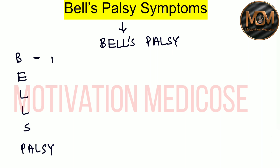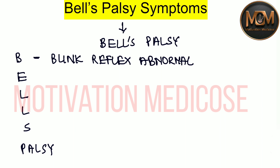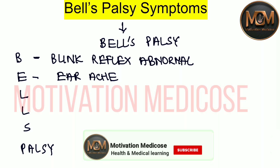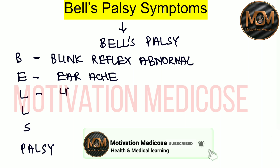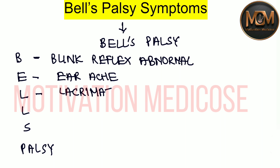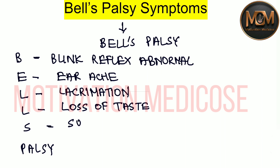From B we have abnormal blink reflex. From E we have earache. From the first L we have lacrimation. From the second L we have loss of taste. From S we have sudden onset.